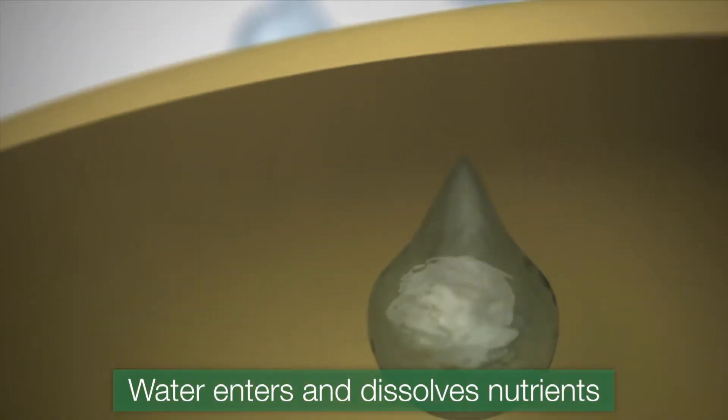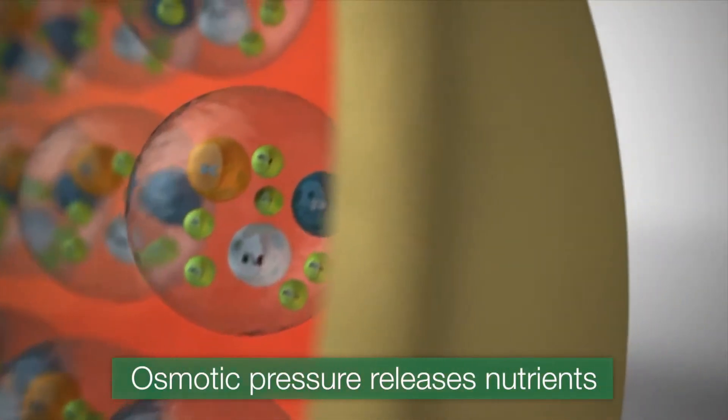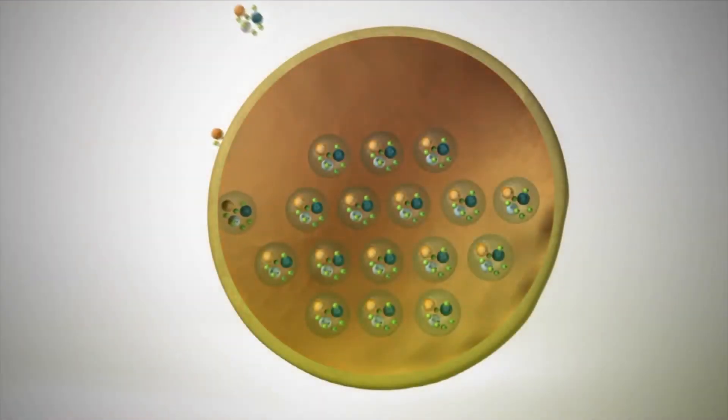Water from soil and the environment enters the prill and dissolves the nutrients. Osmotic pressure then builds inside the prill and the dissolved nutrients are released through the shell.